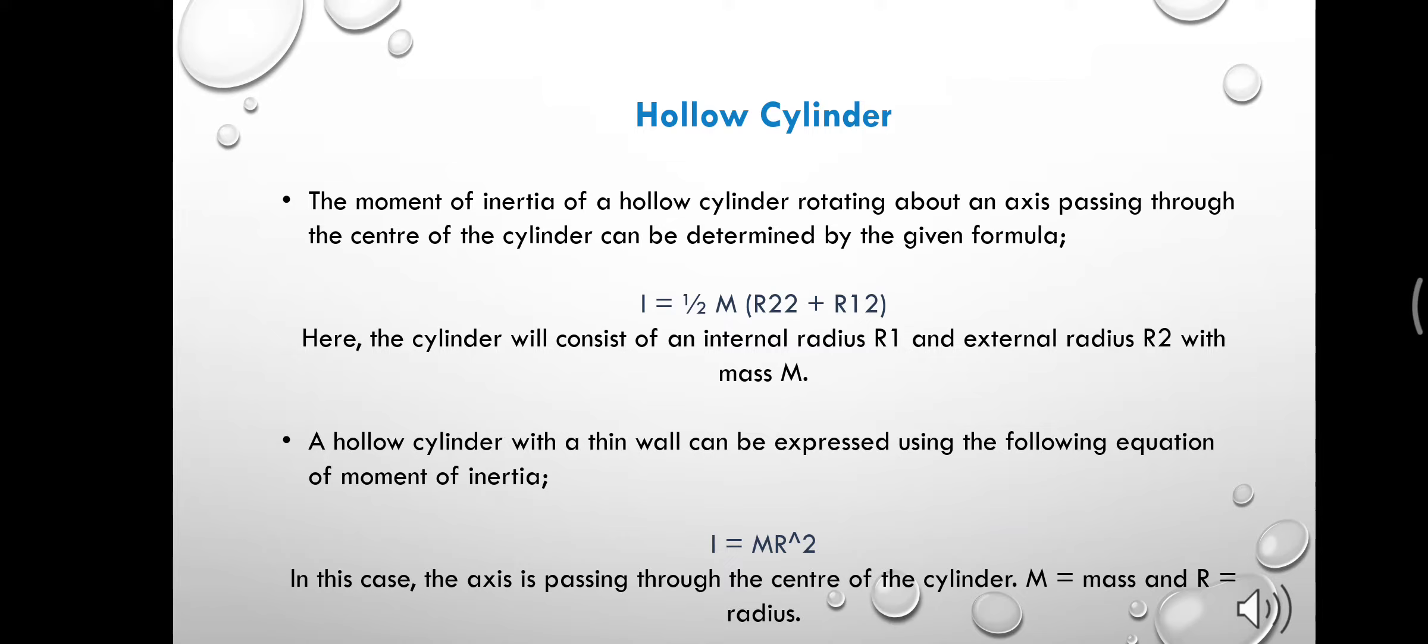A moment of inertia of a hollow cylinder with a thin wall is expressed by the formula I equals to MR square, where M equals to mass and R equals to radius.